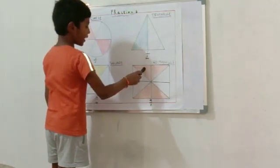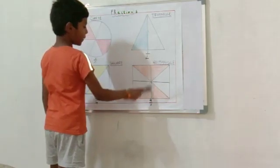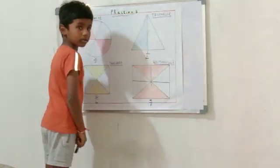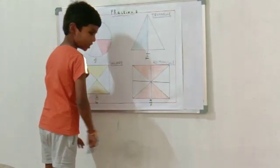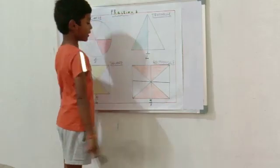Rectangle has 8 divided parts. 4 equal parts are shared. So the fraction of the shared part is 4 by 8.